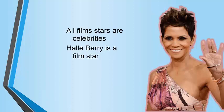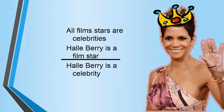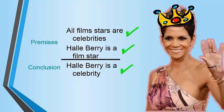Consider the following batch of statements: all film stars are celebrities; Halle Berry is a film star; and Halle Berry is a celebrity. You can divide these statements up into premises and a conclusion that can be reached upon them, and as it turns out, in this case all of our statements turn out as true. But that is not always the case.